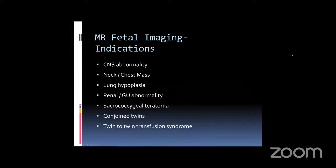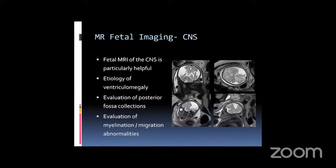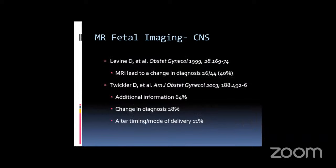Indications for fetal MRI include CNS and chest abnormalities most commonly — particularly diaphragmatic hernia — as well as neck masses, renal abnormalities, sacrococcygeal teratomas, conjoined twins, and twin-twin transfusion. For CNS, fetal MRI is very helpful for the etiology of ventriculomegaly, posterior fossa abnormalities, and evaluation of myelination and migration abnormalities. Deborah Levin found that MRI led to a change in diagnosis in about 40% of cases. Twickler found additional information in 64% and a change in diagnosis in 28%, as well as an alteration in timing or mode of delivery in about 11% of cases.